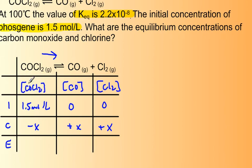So at equilibrium for COCl2, the concentration will be 1.5 minus X. And the concentrations of carbon monoxide and chlorine will both be X. Okay, so that was a quick setup for our ice table for this question.